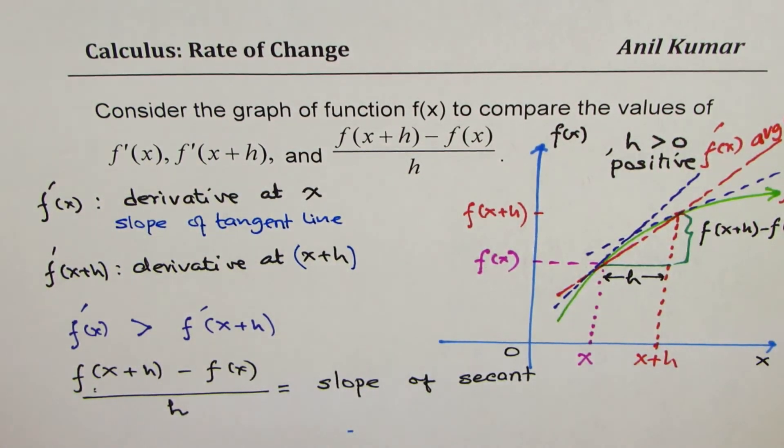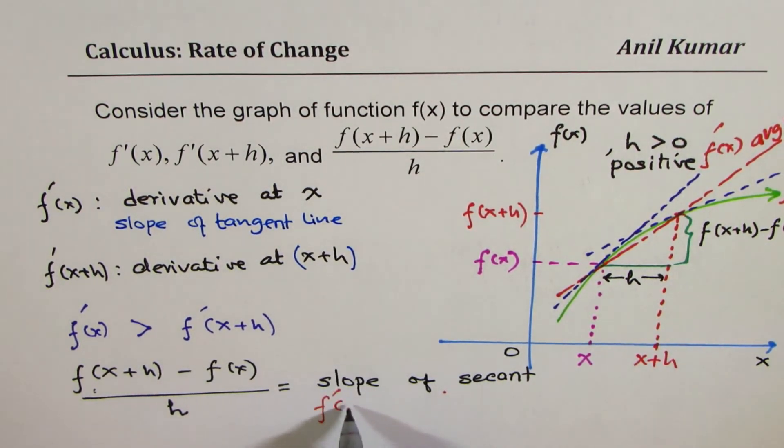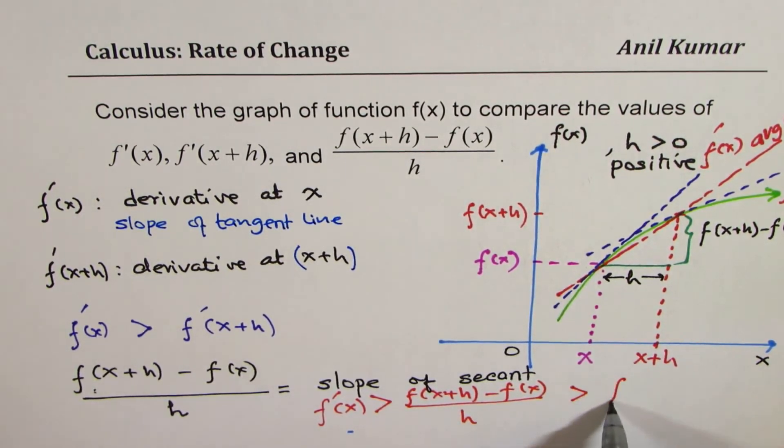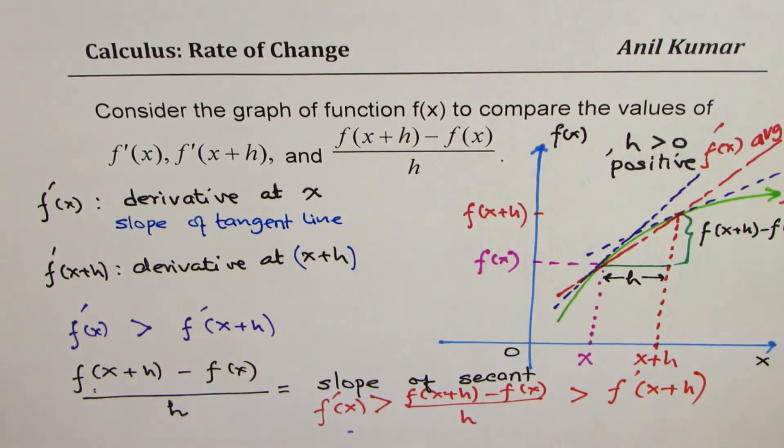So we can write down that the value of derivative at x, or slope of tangent line, is actually highest. So this is the highest value. It is greater than the expression for secant, which is f(x+h) minus f(x) over h, which is actually greater than the derivative of the function at x plus h. It's kind of a mean value between the two, approximately. So that is how they are related.